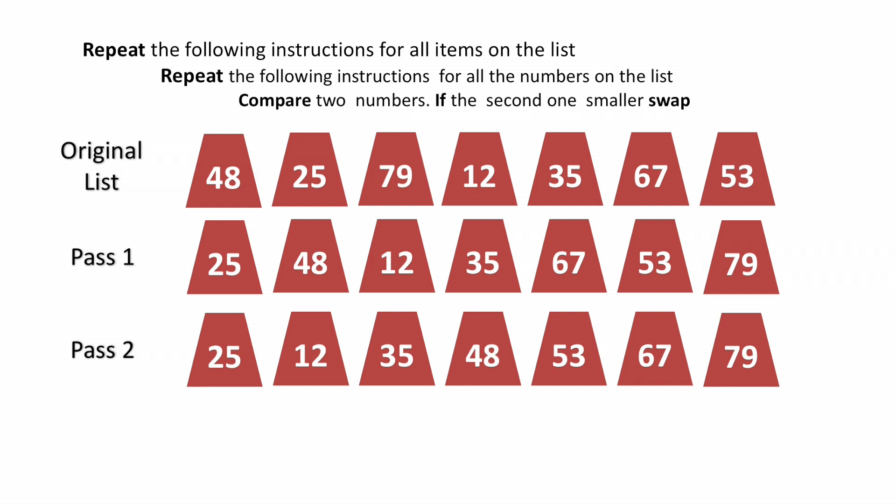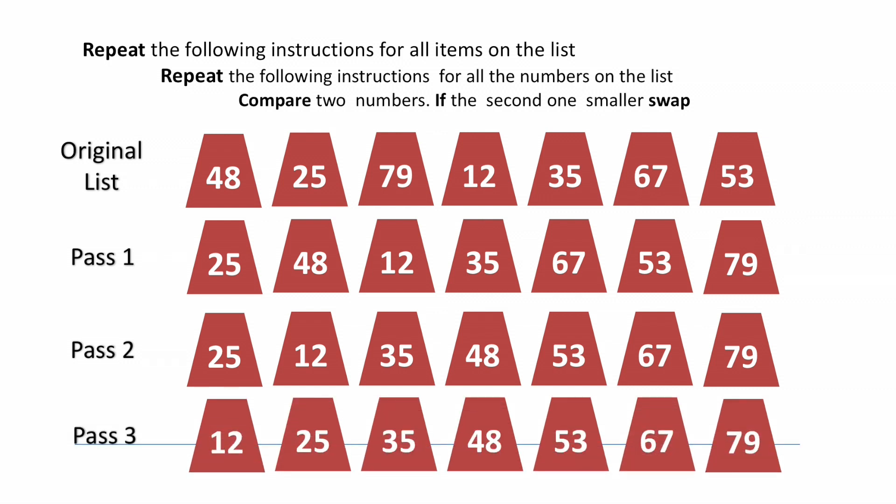Now we need to repeat the same process for the rest of the numbers on the list or for the rest of the items on the list. You just do another for loop, and if you check all the numbers, then the whole list should be sorted. This is, as I said, the least efficient method of sorting something, but easy to understand.